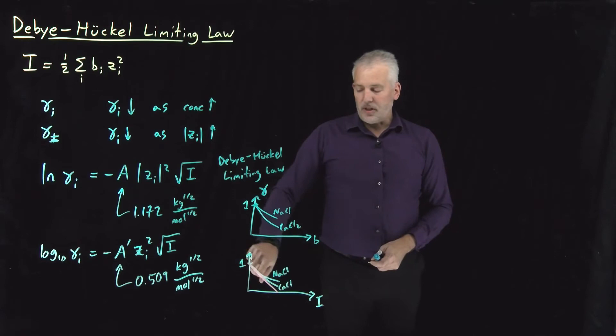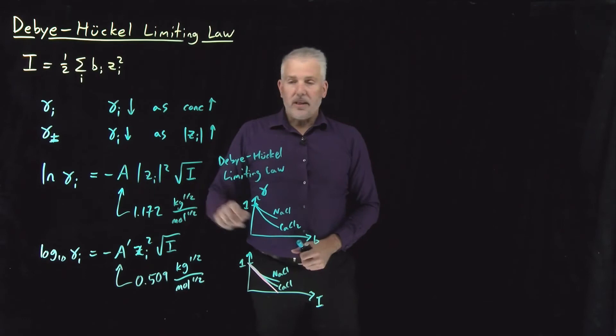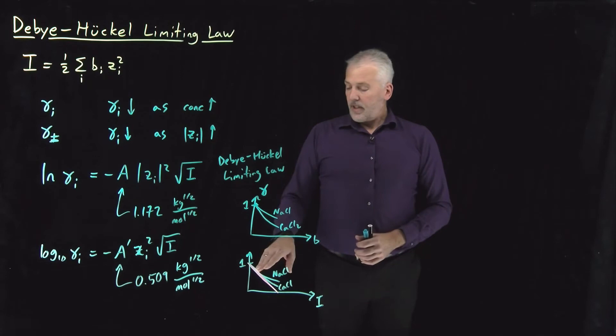The pink line I've drawn here is the prediction given by this Debye-Huckel limiting law, which says that all solutions, doesn't matter what it is, will have activities that depend on their ionic strength in a particular way. The ionic strength is one way of taking account of the fact that the more strongly charged ions decrease their activity faster.